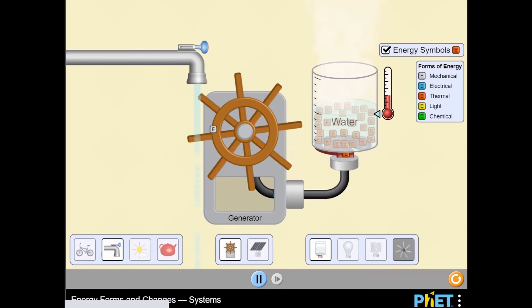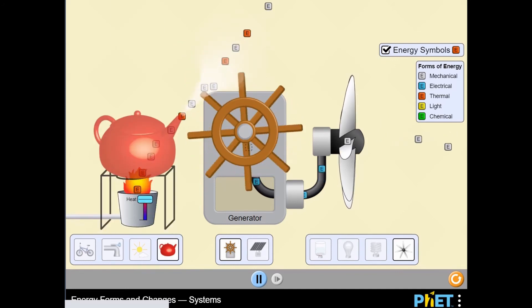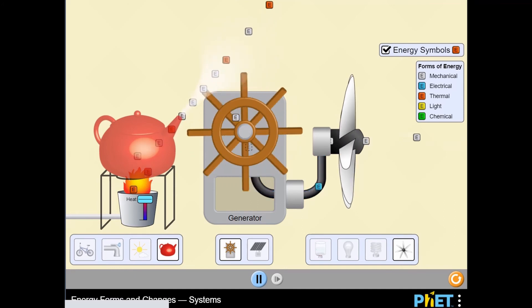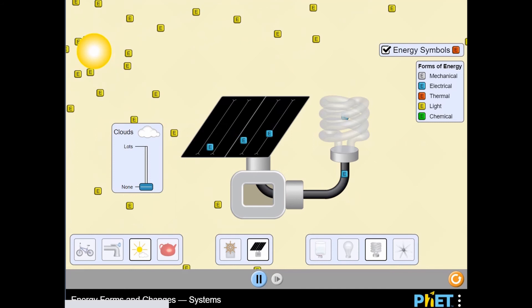Experiment with the different objects by combining them to see if any energy is produced. Not all combinations will work, because a girl riding a bike will not generate energy to power a solar panel, but the sun will give the solar panel energy to power a lightbulb.